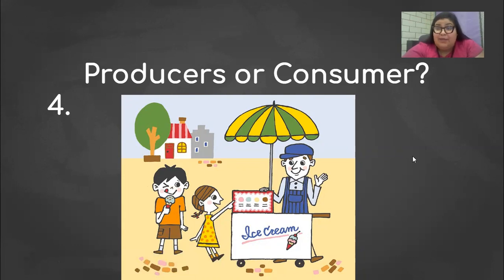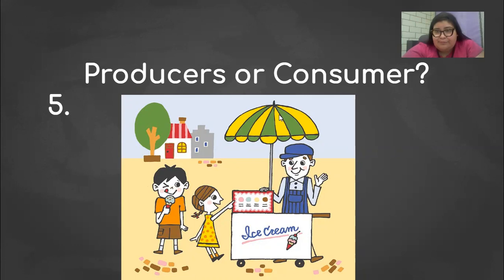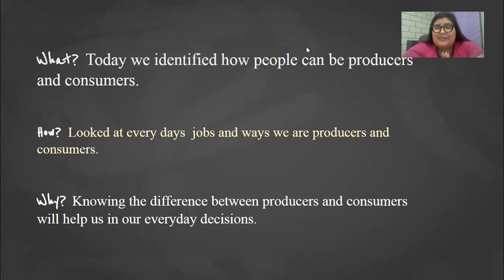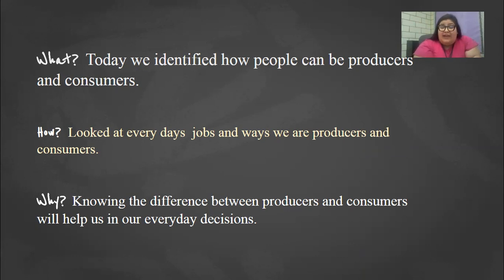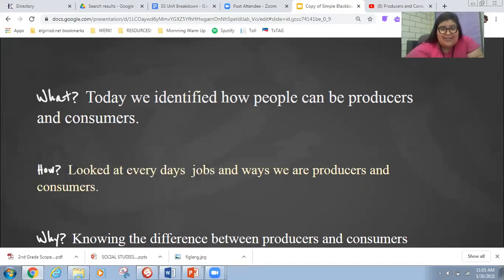Number five — same picture, but I'm asking about this guy giving away the ice cream. Is he a producer or is he a consumer? All right, boys and girls, let's wrap up our activity for the day. Today we identified how people can be producers and consumers and noticed it happens in our everyday life. We looked at everyday jobs and ways that we are producers and consumers by watching videos and going through this PowerPoint. It's important to know this because we are producers and consumers and it'll help us in our everyday decisions. We'll see you later — have a great day, bye-bye.